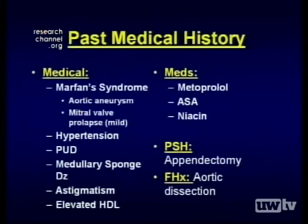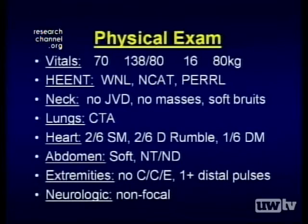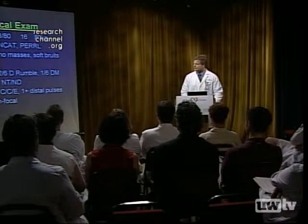Past surgical history only included appendectomy. He also had a significant family history of Marfan syndrome and prior aortic dissection in family members. His physical exam was largely unremarkable. His vital signs were stable. His carotid arteries had bilateral soft bruits, which were related to his new onset of aortic insufficiency related to his aortic dissection. His lungs were clear to auscultation. His heart had both a systolic and diastolic murmur, but otherwise a regular rate and rhythm. His abdomen was benign. His extremities had preserved pulses and movement and sensation; however, his pulses were somewhat weakened. Neurologically, he was grossly intact and non-focal and hadn't suffered a stroke or transient ischemic event at this time.